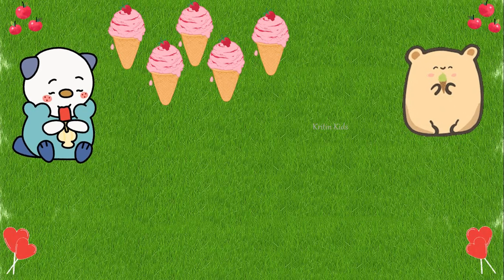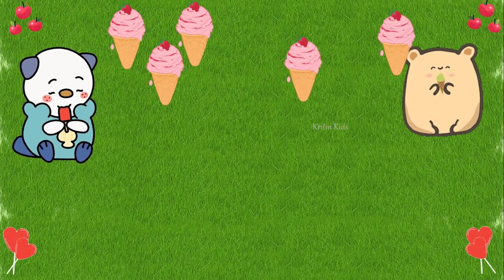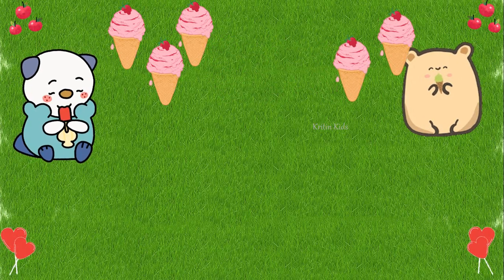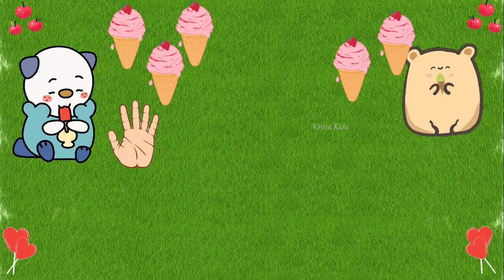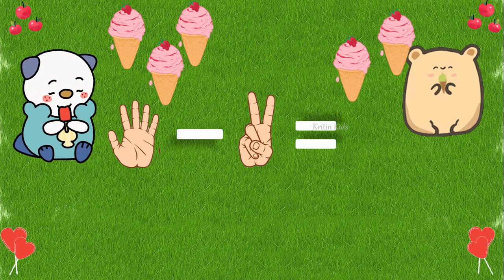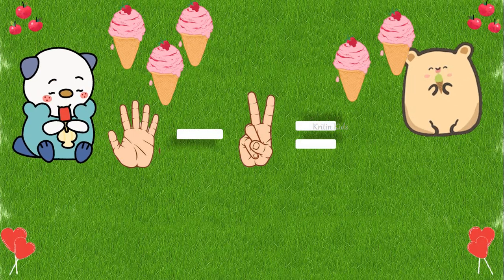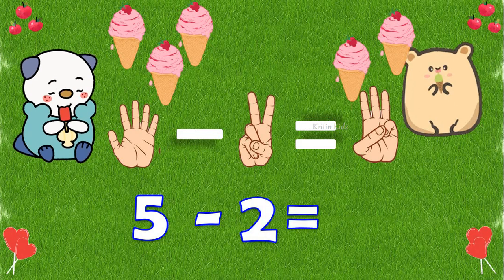Let's check one more example. One, two, three, four, five — I have five ice creams. I will give two ice creams to my friend — one, two. So how many ice creams do I have now? Five ice creams means five fingers, two ice creams I gave to my friend means five minus two. I should close two fingers, and I am left with three fingers — that means five minus two equals three.